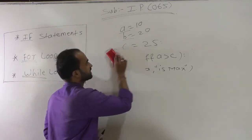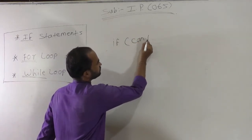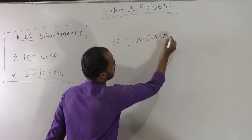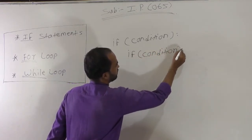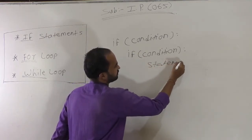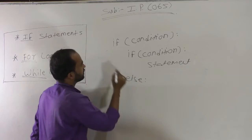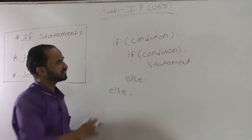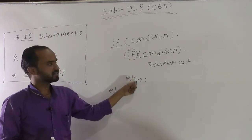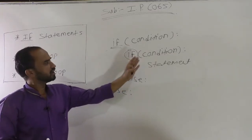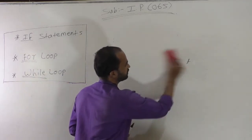There is one more type in the if statement called nested. Nested means there is one if condition, and inside that if there is another if statement with its own statements and else part. We can call this structure nested because we have written one if inside another if, and the else is part of the inner if statement. Nested means one inside the other, and the flow of control works the same way.